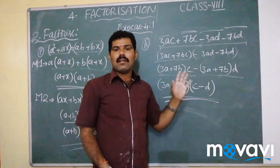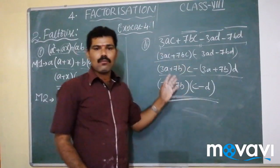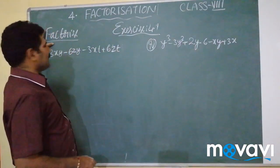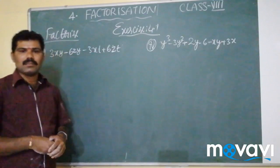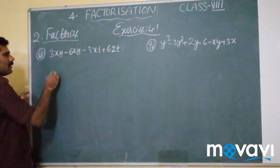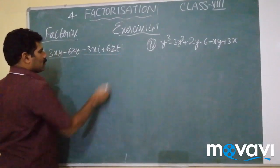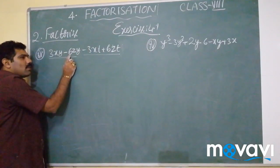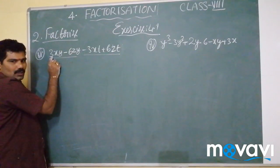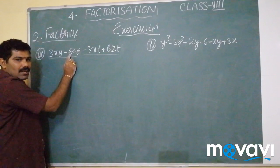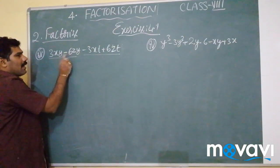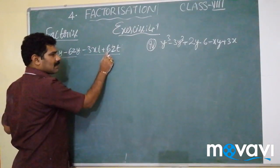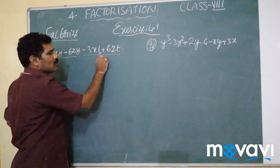I hope you understood the first and second problems. Now let us go to the third and fourth problem of the second method of exercise 4.1. Here we can group these two and these two terms, where Y is the common factor in the first pair and 3 is also a common factor. The 6 here can be written as 3 into 2, so 3 and T are common in the second pair.